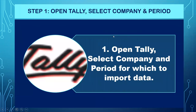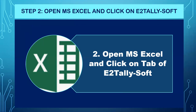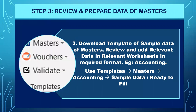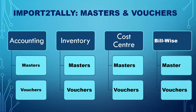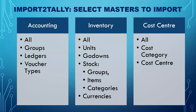The seven steps: first, open Tally and select the company and period. Second, open MS Excel and click the E2TallySoft tab. Third, download the template — it's important the template is in the format we have designed; we provide templates with sample data and ready-to-fill versions. Fourth, you can import accounting, inventory, cost center, or bill-wise data — creating masters first for groups, ledgers, and voucher types, or for inventory: units, godowns, stock groups, items, categories, and currencies. Fifth, download the templates of sample data vouchers.